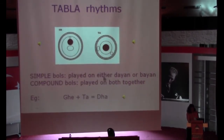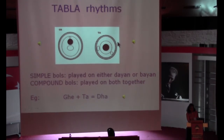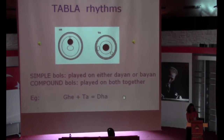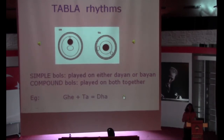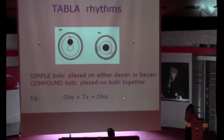We have these composite bols — for example, ghe is the left-hand bass drum with a slight gliss sound. Ta is the right-hand drum. When we play them together we get dha. In auditory scene analysis, this compound bol would be called a chimerical percept, because it doesn't really exist as a fused sound — we have put it together and called it one thing, even though it's actually two different things being played together.